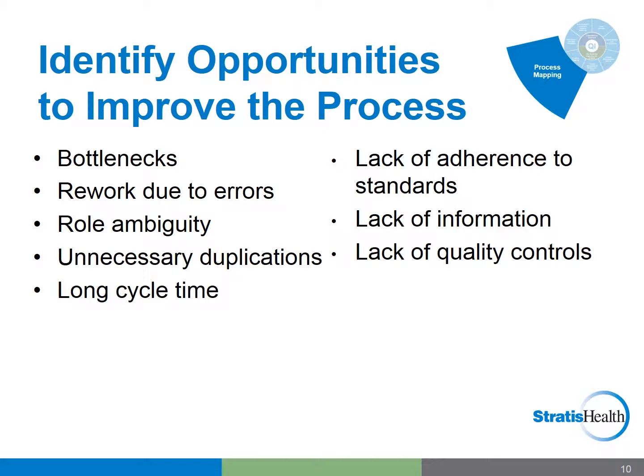Lack of information — do we have all the information to carry out tasks or steps in the process, which can lead to delays and wait times? Lack of quality controls — are we measuring the process in a way that we can better understand and improve it? What measures do we have in place to provide information so we can analyze, study, and recommend improvements? Did you notice that unnecessary duplications is repeated twice in this slide? The idea with this intended repetition is that you may make similar discoveries when you visually document the steps of the process — perhaps not a repetition, but one of the process pitfalls that we just covered in the list.